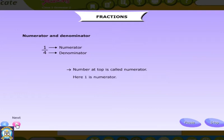Here, 1 is the numerator. The number at the bottom is called the denominator. Here, 4 is the denominator.